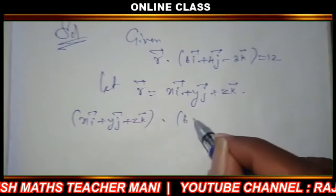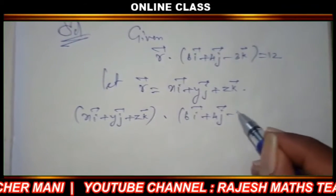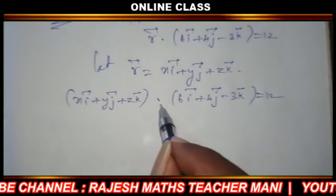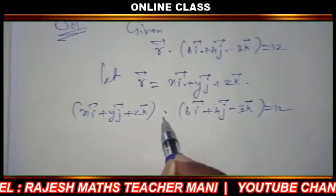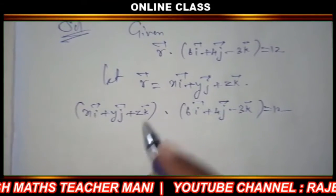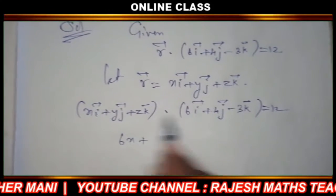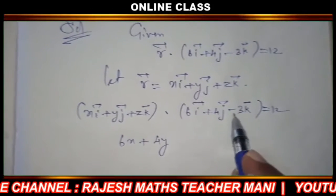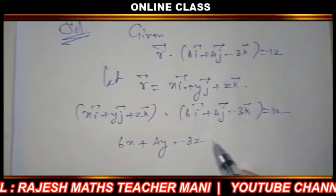So this is 6i vector plus 4j vector minus 3k vector equal to 12. Remember, this dot product: 6x plus 4y minus 3z equal to 12.